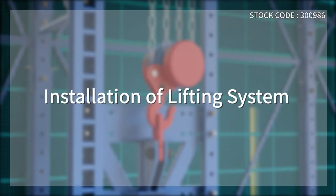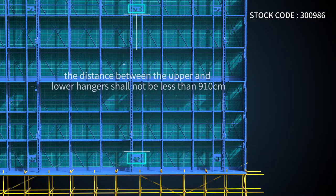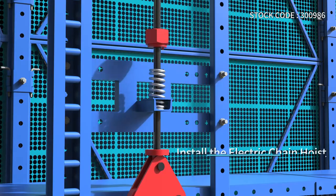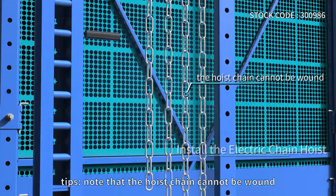Installation of the lifting system: Install the upper and lower hangers. The distance between them shall not be less than 910 cm. Install the electric chain hoist. Note that the hoist chain cannot be wound.